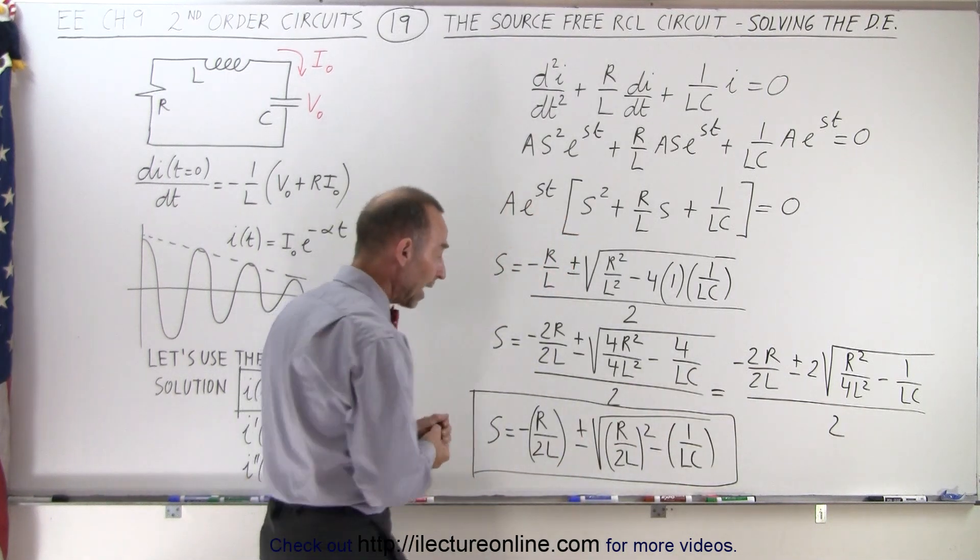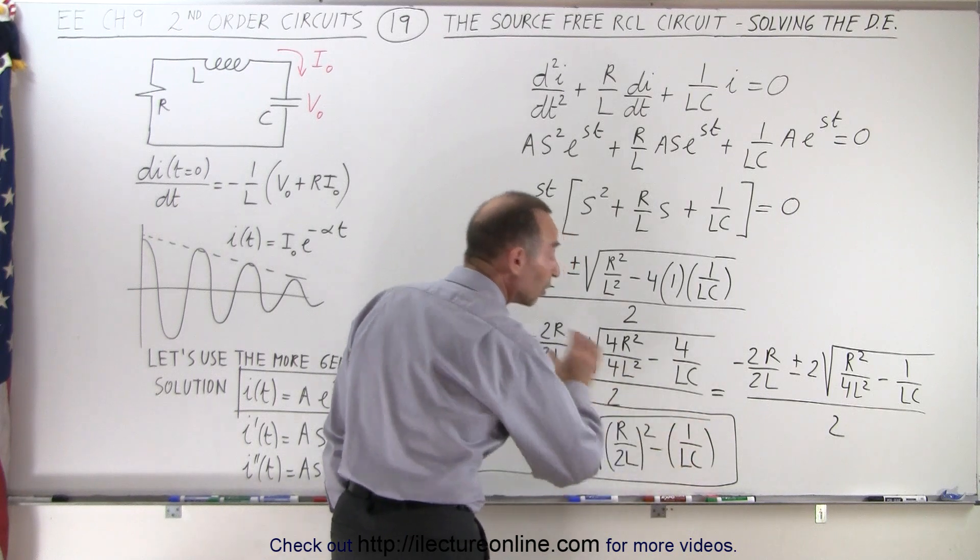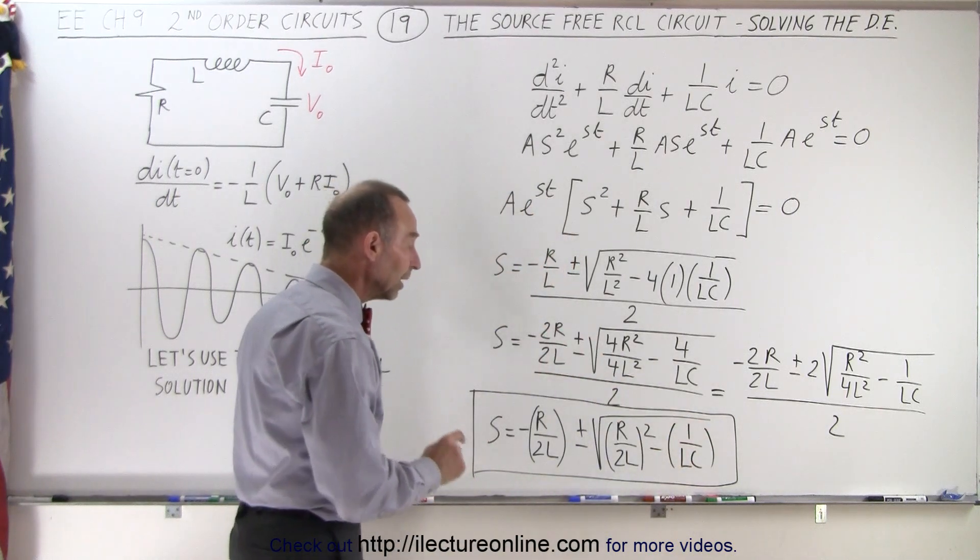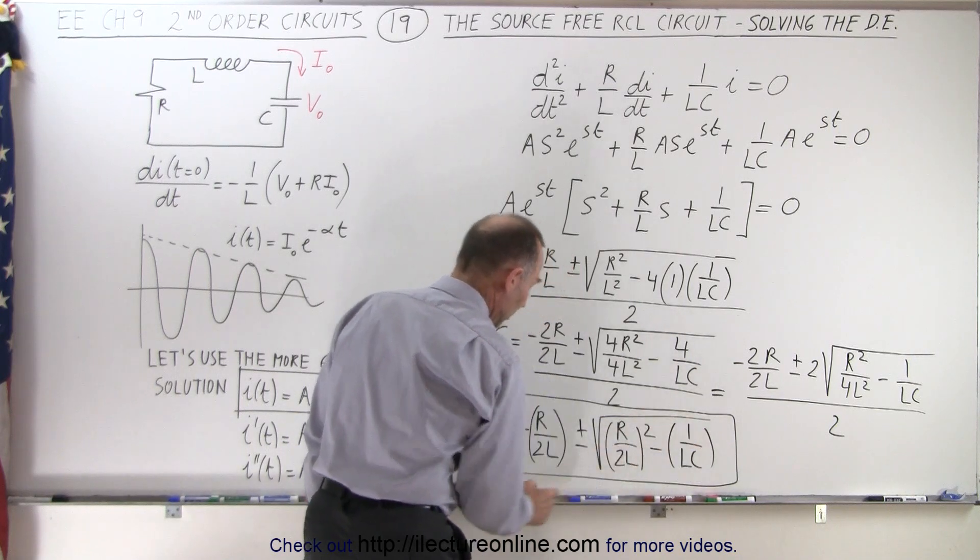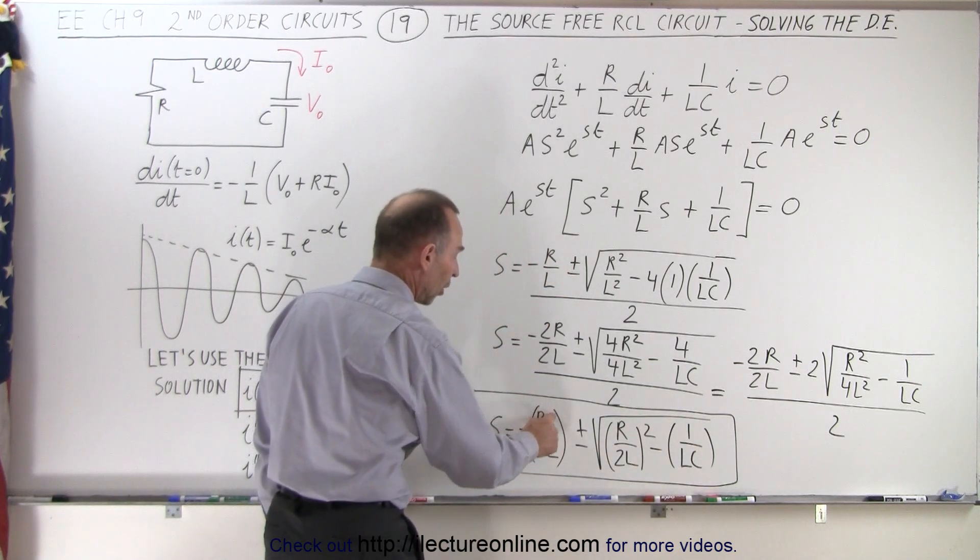Now notice that we have a radical and something that we need to radical. And let's assume that r divided by 2l quantity squared is bigger than 1 over lc. In that case, we have a positive result here and a real solution. What if this term equals this term? Then the radical disappears, and s simply becomes minus r over 2l.